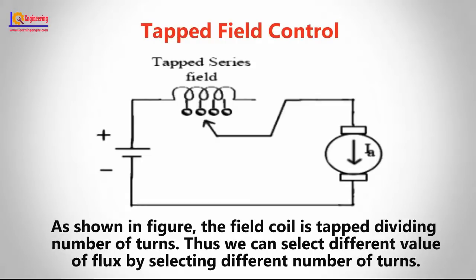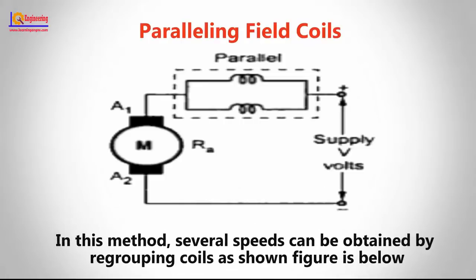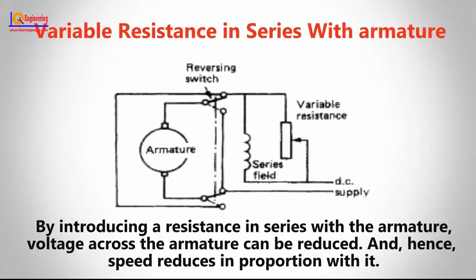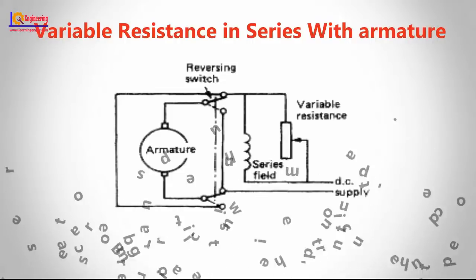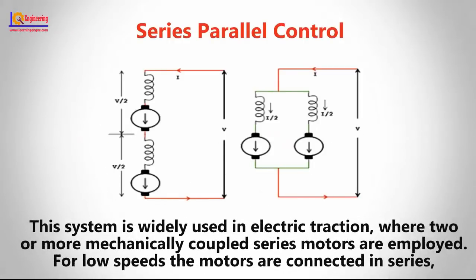In the tapped field control method, as shown in the figure, the field coil is tapped at a divided number of turns. Thus we can select different values of flux by selecting different numbers of turns. In the paralleling field coils method, several speeds can be obtained by regrouping the coils as shown in the figure. By introducing a resistance in series with the armature, the voltage across the armature can be reduced and hence speed is reduced in proportion with it.